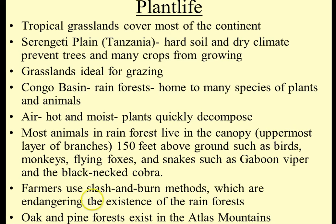The Congo Basin rainforest is home to many plants and animals. Hot and moist conditions cause plants to quickly decompose. Most animals in the rainforest live in the canopy — the uppermost layer of branches, about 150 feet above the ground — such as birds, monkeys, flying foxes, and snakes. To create more farmland, farmers use the slash and burn method, cutting down trees and burning the area to create flat land.